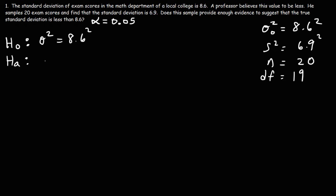For the alternative hypothesis, the professor believes the variance to be less than 8.6 squared, based on what was stated here.